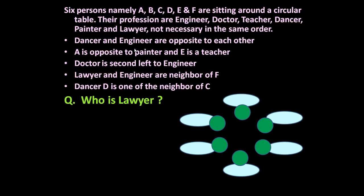The first statement is: dancer and engineer are opposite to each other. As it is a circular arrangement, you can start from any point and you will get the same answer. So let us take any one position as dancer, and opposite to dancer is the engineer. The first statement is taken care of.